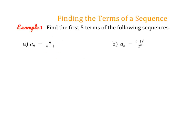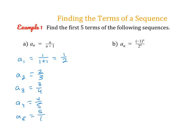First we're going to practice finding the first five terms of a sequence. Let's start with a_sub_n equals n over n plus 1. To find the first term, a_sub_1, we replace n with 1: 1 over 1 plus 1 is 1/2. Then a_sub_2 is 2/3, a_sub_3 is 3/4, a_sub_4 is 4/5, and a_sub_5 is 5/6. So we just found the first five terms of that sequence.